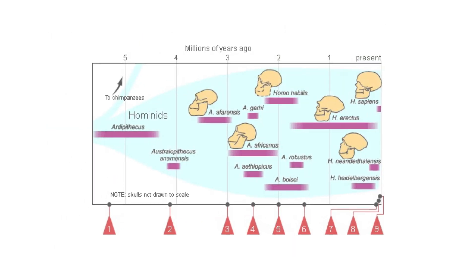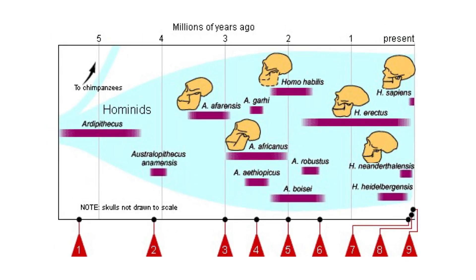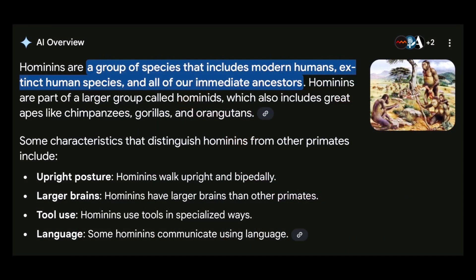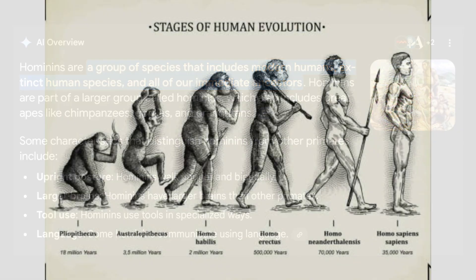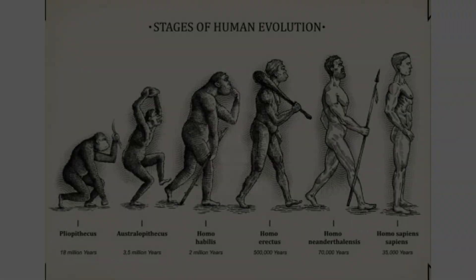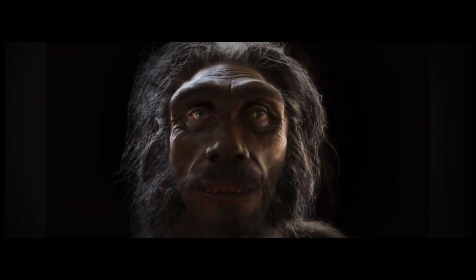All the human-related genera of tribe Hominini that arose after divergence from Pan are members of the sub-tribe Hominina, including the genera Homo and Australopithecus. This group represents the human clade, and its members are called hominins.